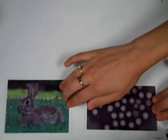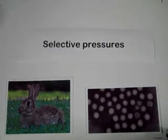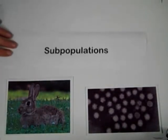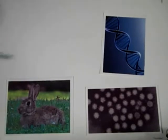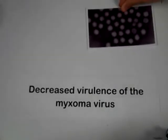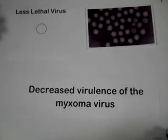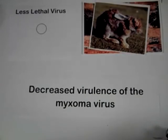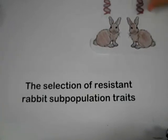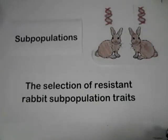As a result, the rabbits and virus continuously exert selective pressures on one another to select for the subpopulations within each species that possess the optimal traits for survival and reproduction. This is the basis of co-evolution. The decreased virulence of the myxoma virus was important for the virus to survive, or else it would have completely eradicated the rabbit population and died along with its host. The selection of traits in rabbits came from those subpopulations that were resistant, and thus their resistance was prevalent in the following generations.